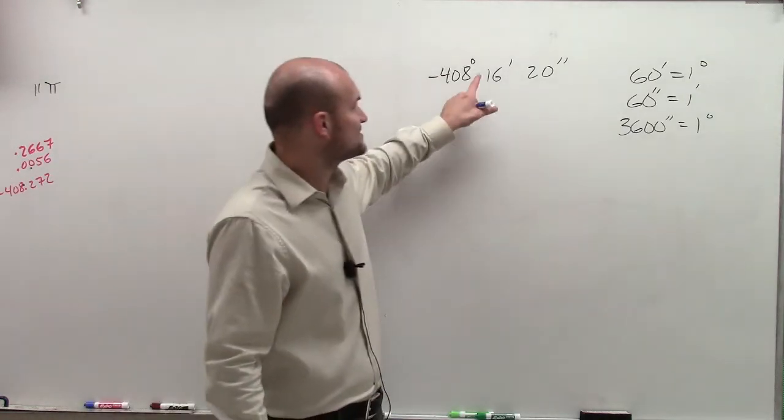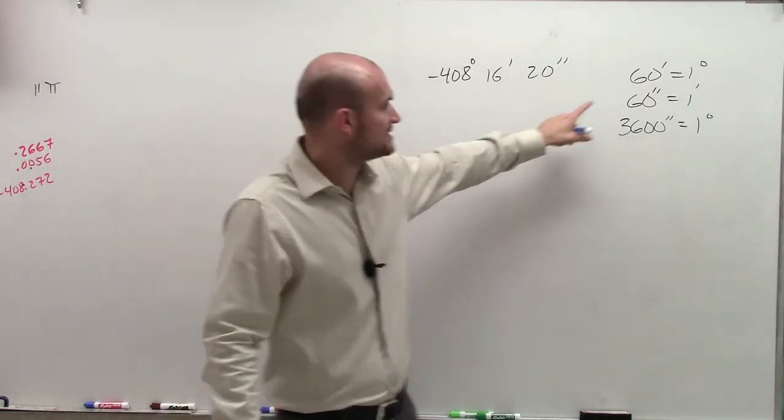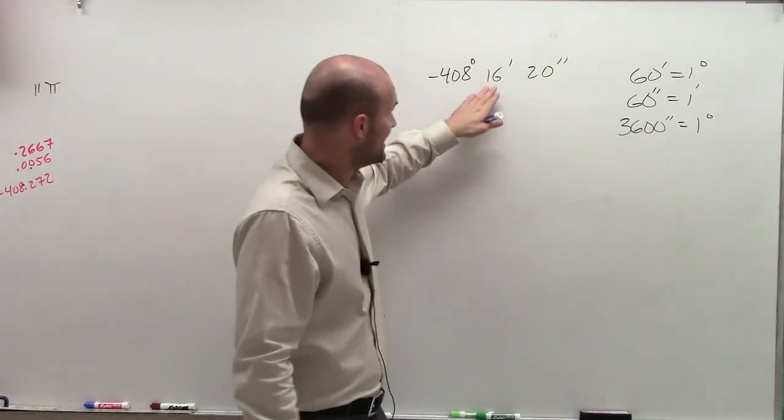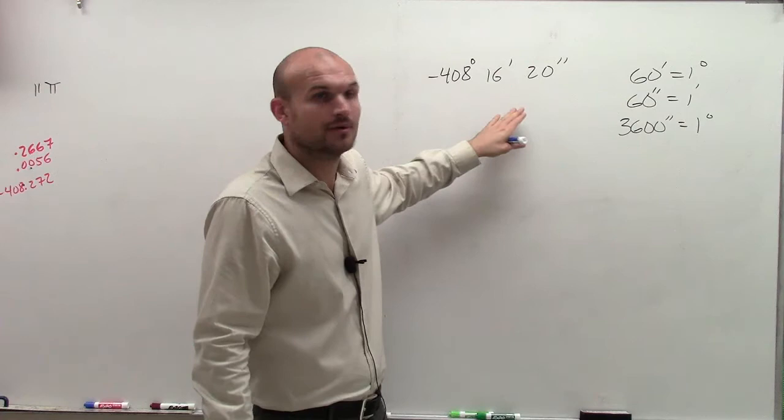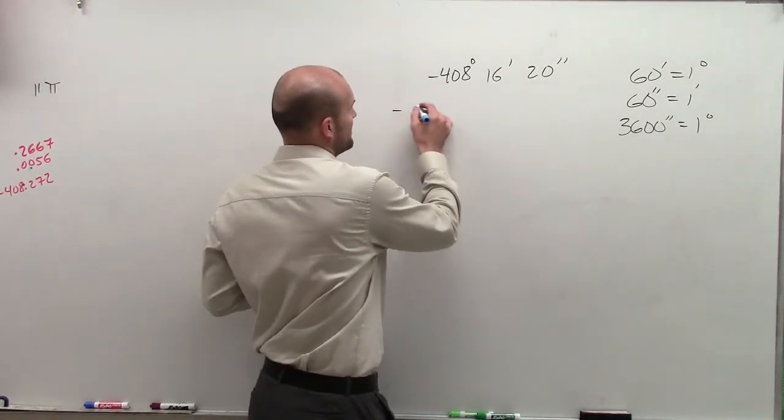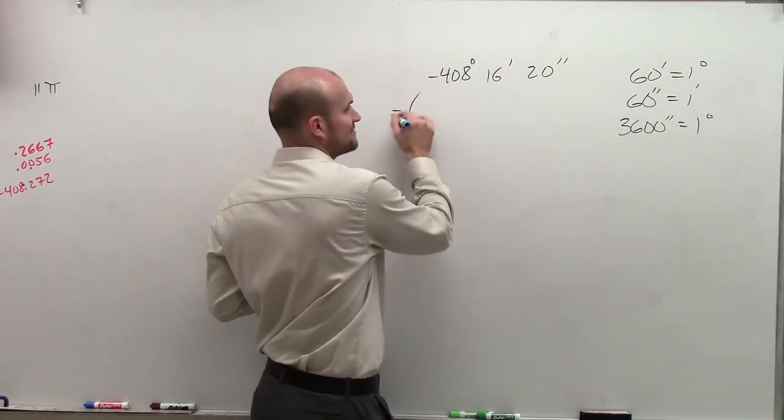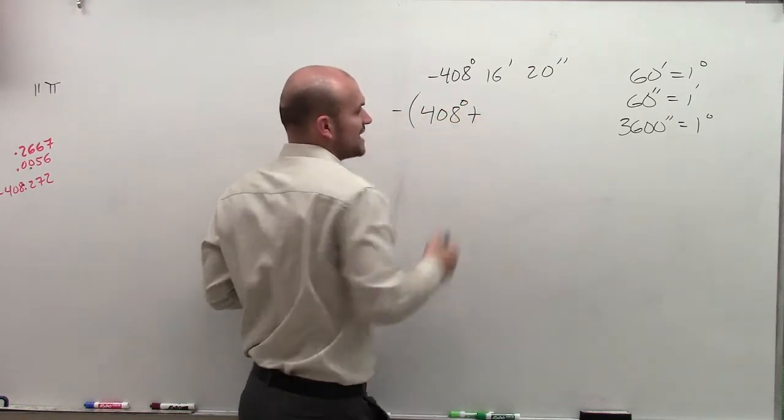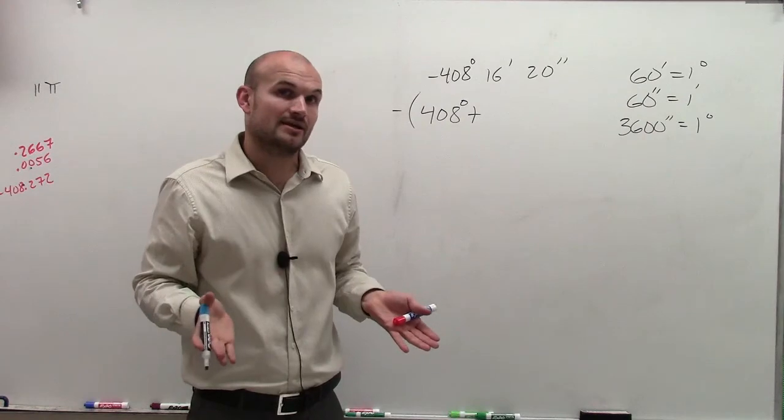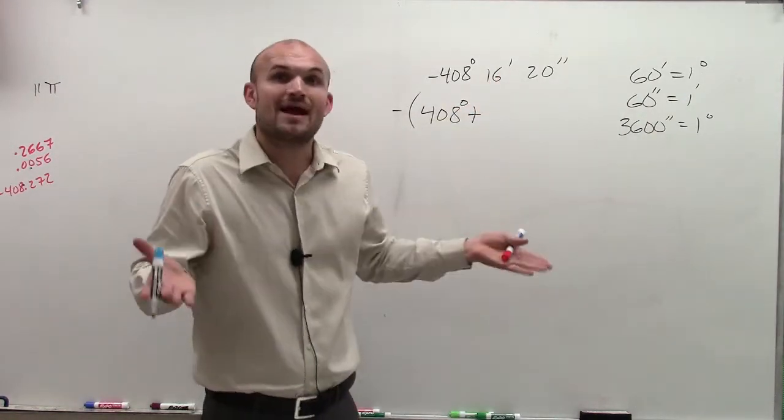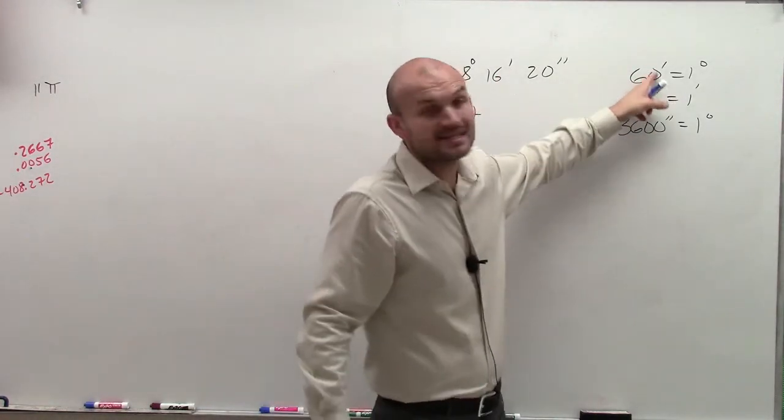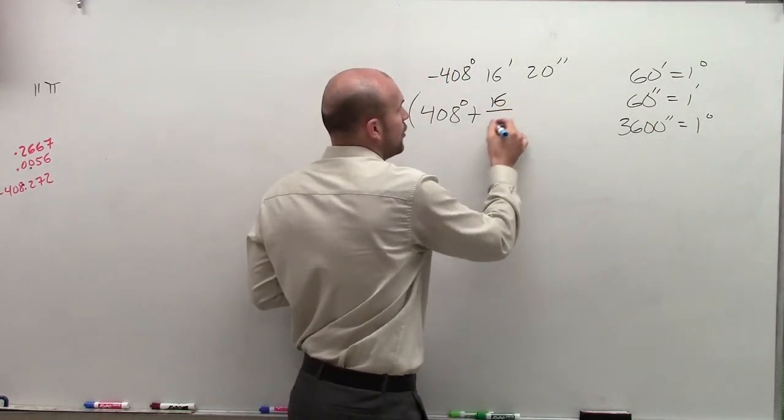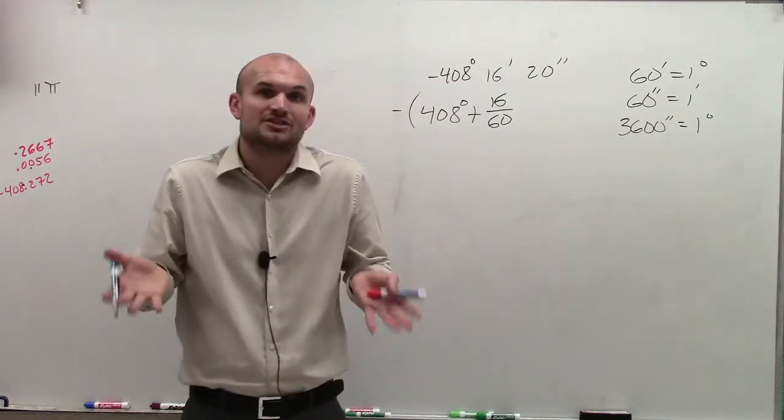Now I have 16 minutes. Remember, it takes 60 minutes to make 1 degree, so I need to write this as a ratio. I'm going to factor out the negative because it just tells us direction. So I have 408 degrees plus a fraction of a degree. Because 16 minutes is a fraction—it takes 60 of them to make 1 degree. I only have 16 over 60, a fraction of a degree.